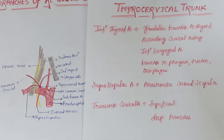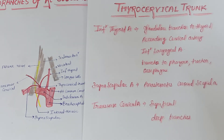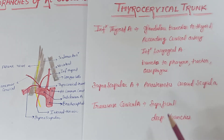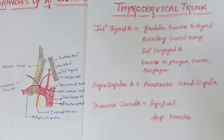The transverse cervical artery runs laterally above the suprascapular artery, crossing the scalenus anterior and phrenic nerve, passing behind the internal jugular vein and sternocleidomastoid. It then crosses the brachial plexus and the floor of the posterior triangle to reach the anterior border of the trapezius, where it divides into superficial and deep branches. The superficial branch accompanies the spinal root of the accessory nerve to the lower end of the muscle; the deep branch passes deep to levator scapulae and takes part in the anastomosis around the scapula.